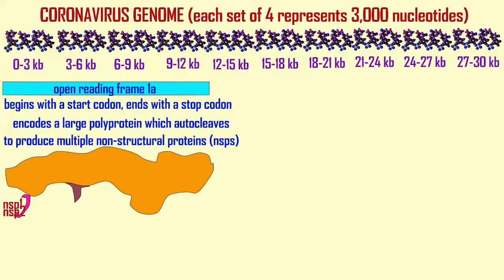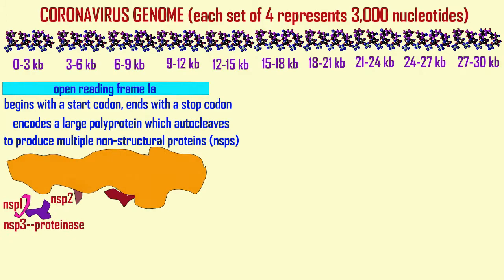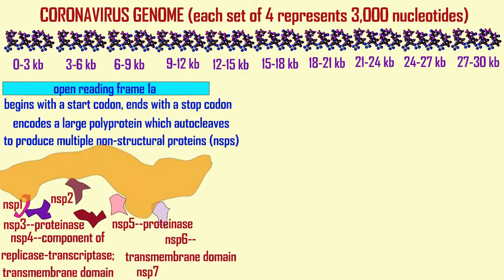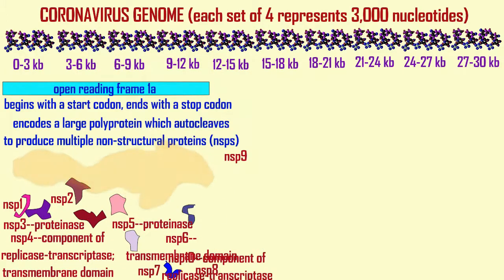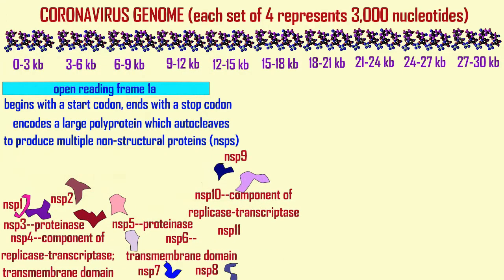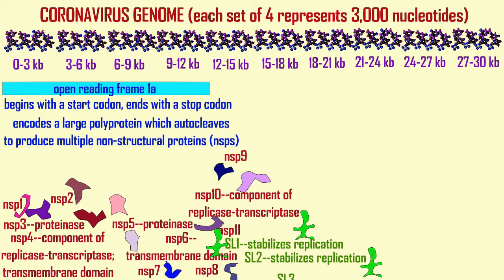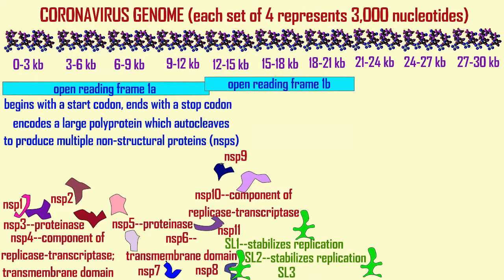In addition to the NSP proteins, there are small RNA molecules which are regulatory, stabilizing replication: SL1, SL2, and SL3.